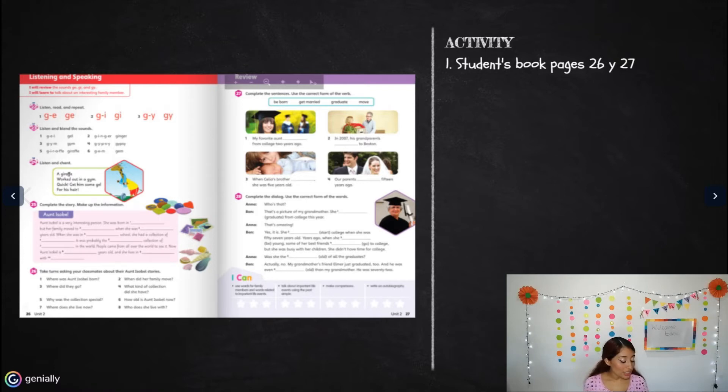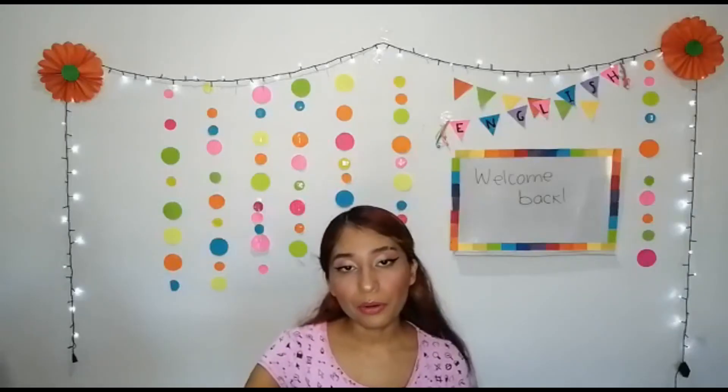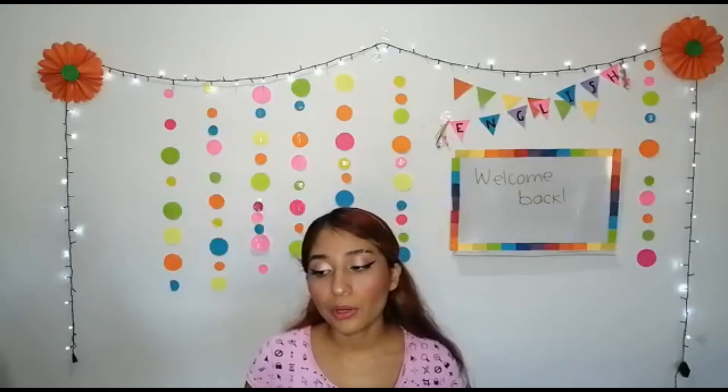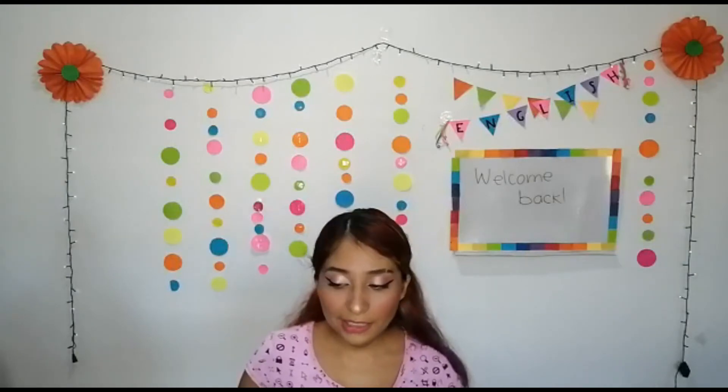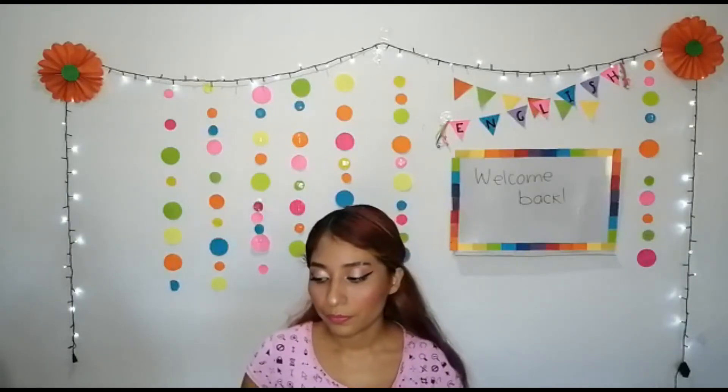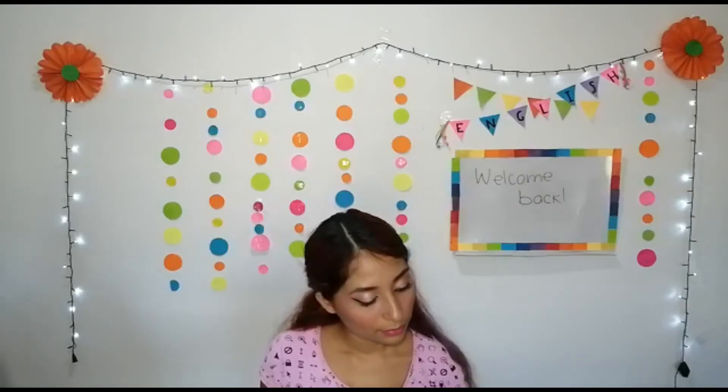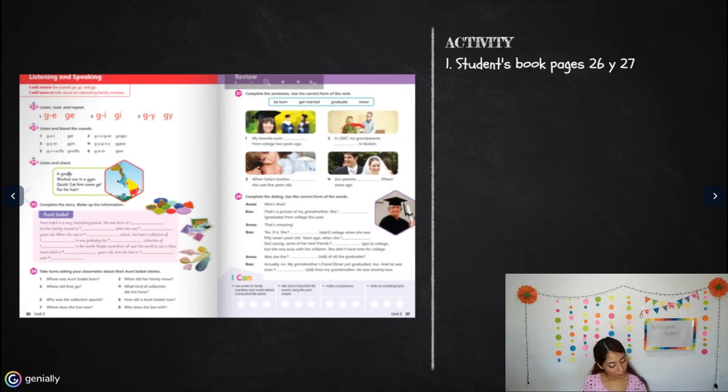Now we are going to listen to the audio and I want you to try to be as fast as it goes. Let's follow this reading. Student's book page 26, activity 24, listen and chant. A giraffe worked out in a gym. Quick, get some gel for his hair. Okay, that's it, super fast. You can go back and play it one more time.